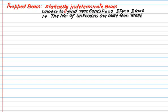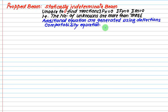So what does statically indeterminate mean? The number of unknowns exceeds 3 — say 4, 5, 6, or 7. Then the three classical mechanics equations — Sigma Fx = 0, Sigma Fy = 0, and Moment = 0 — are not sufficient to find all reactions. So additional equations can be generated using deflection equations, hereafter called compatibility equations.